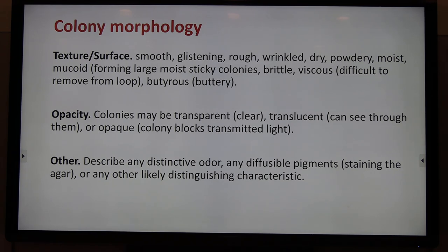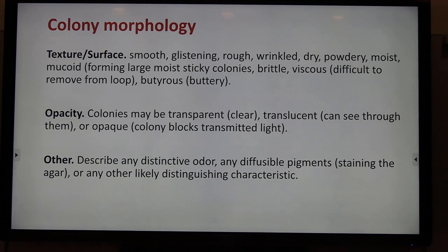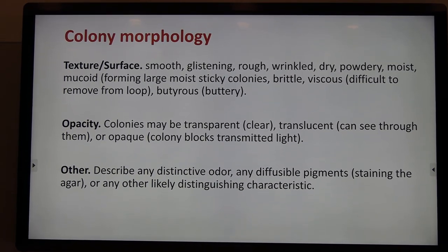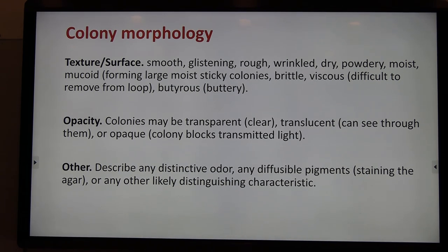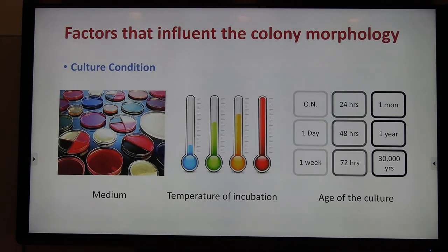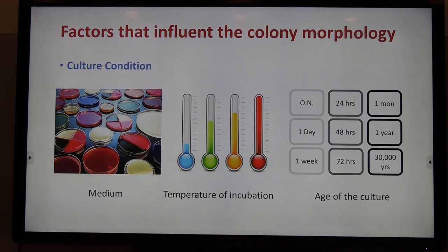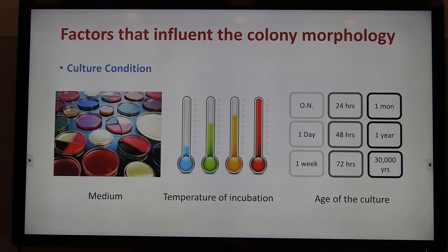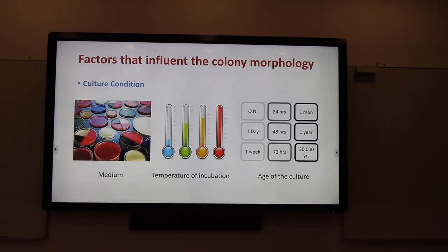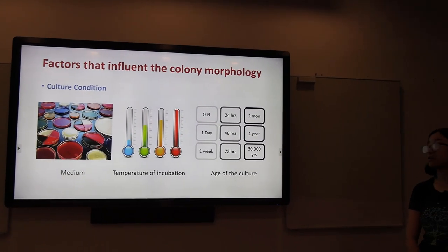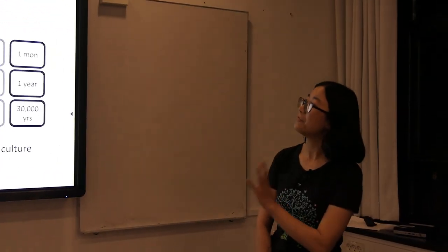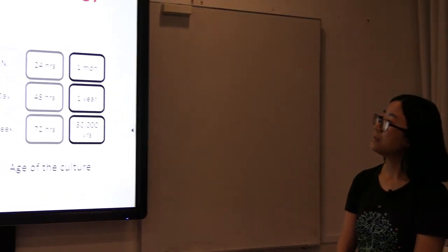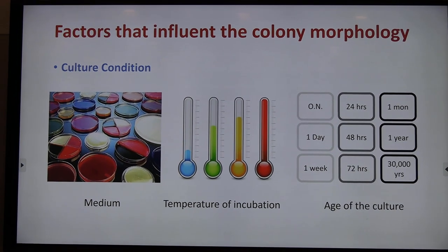There are other features that need to be described if you can observe them in your colonies, which includes the surface. For example, some bacterial colonies have a surface that is much drier or rougher than others — try to describe these in your notes. It needs to be mentioned that even for the same species, colony morphology could be modified and differ under different cultural conditions, such as the medium, temperature of incubation, or even the age of the cultures. Since these factors influence colony morphology, you really need to mention the cultural conditions in your colony morphology description.